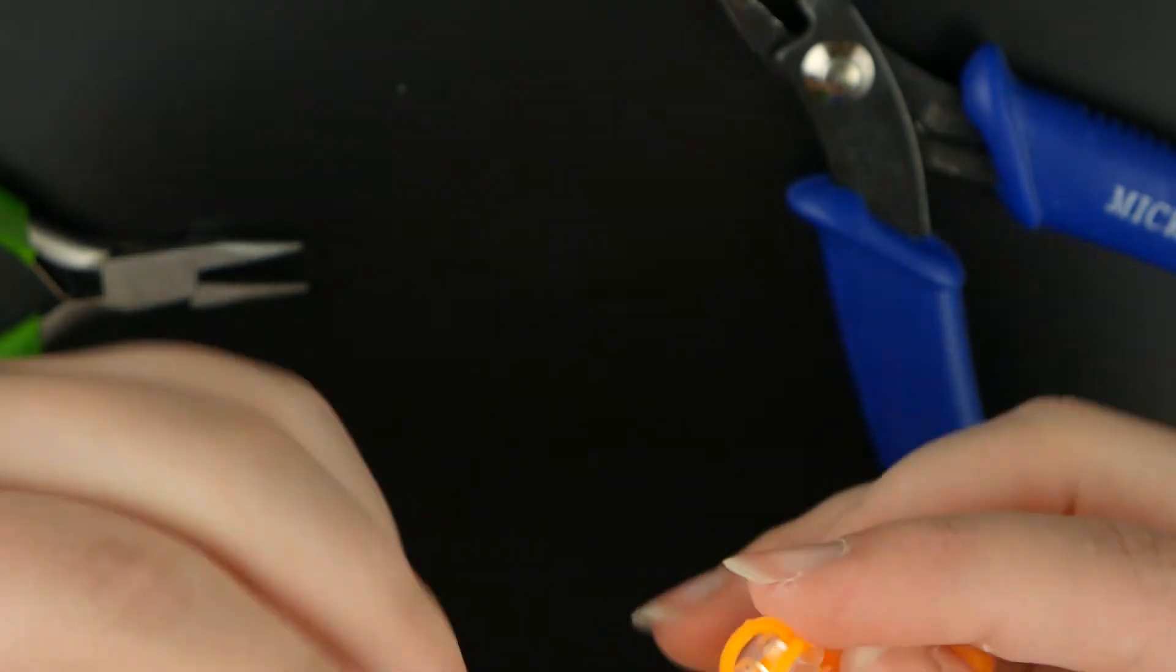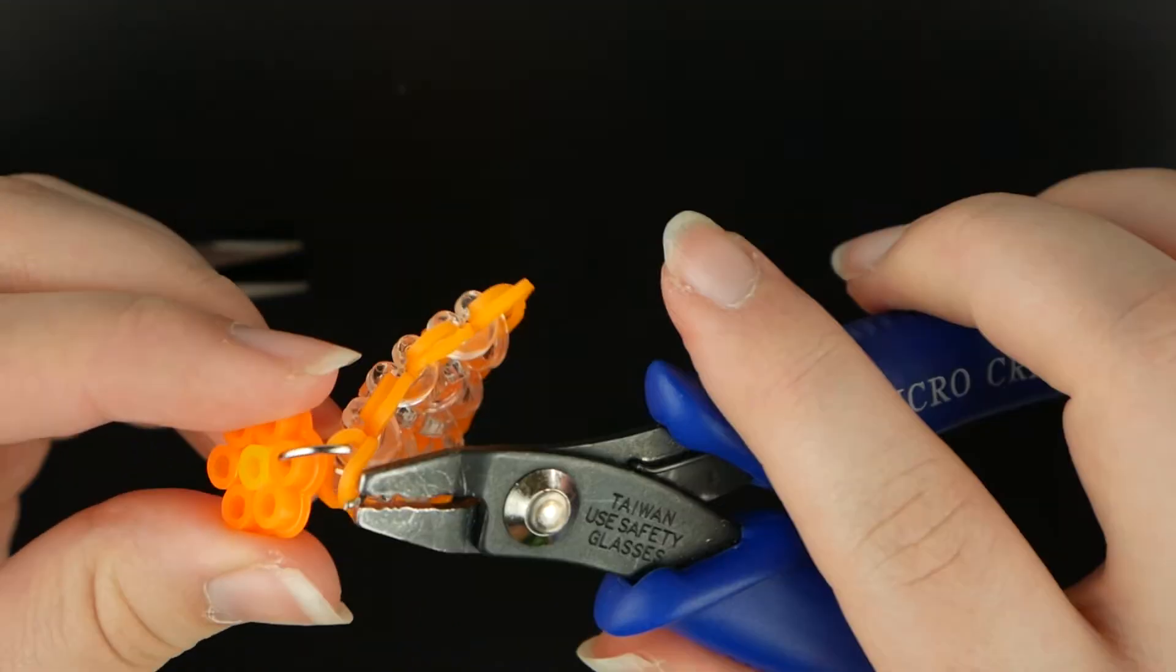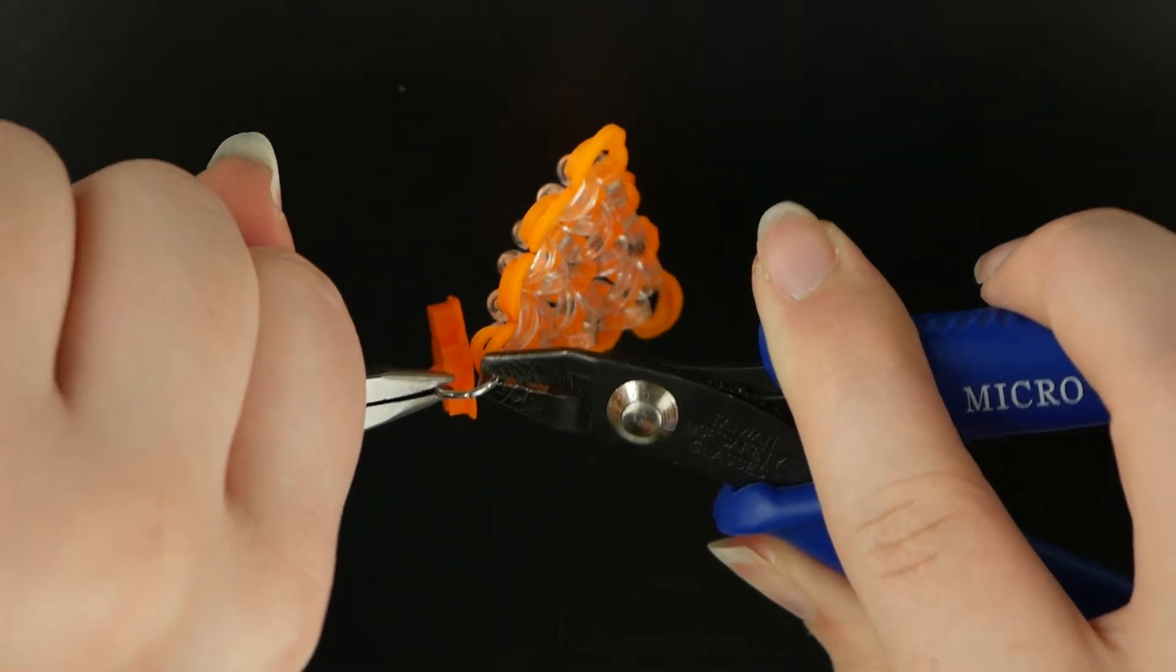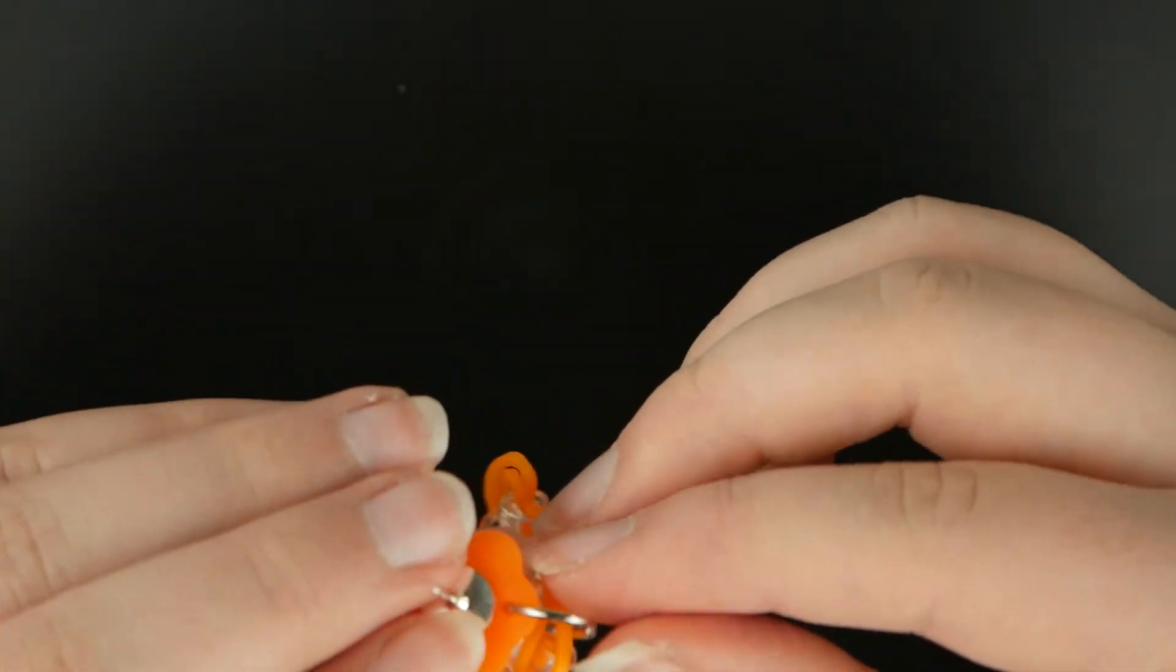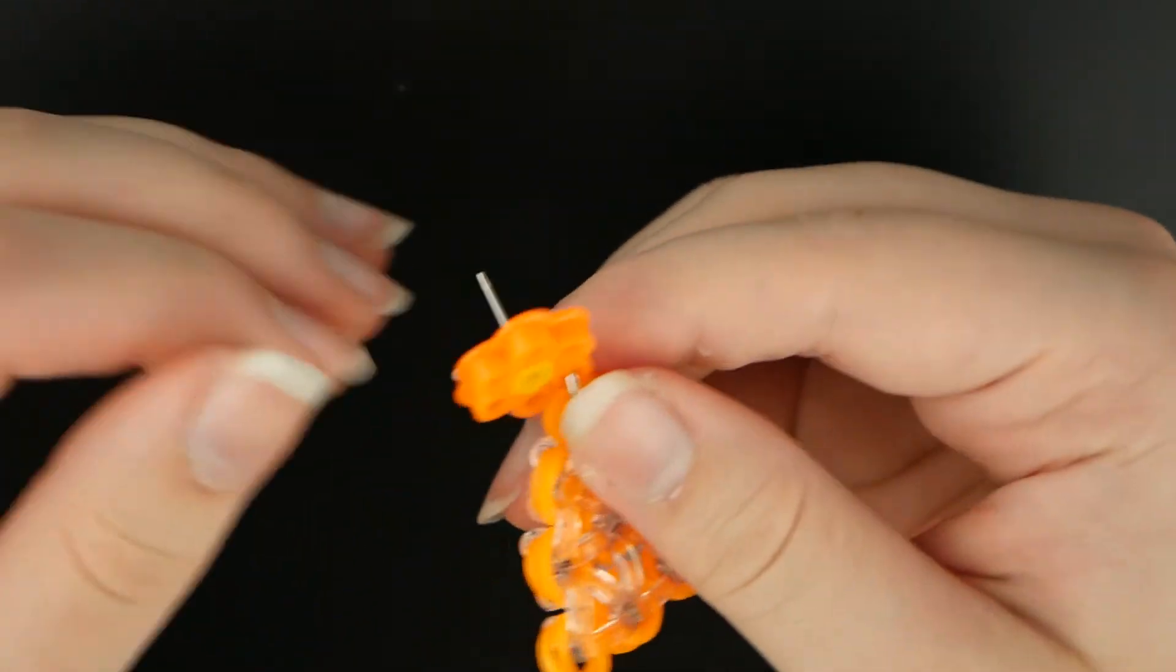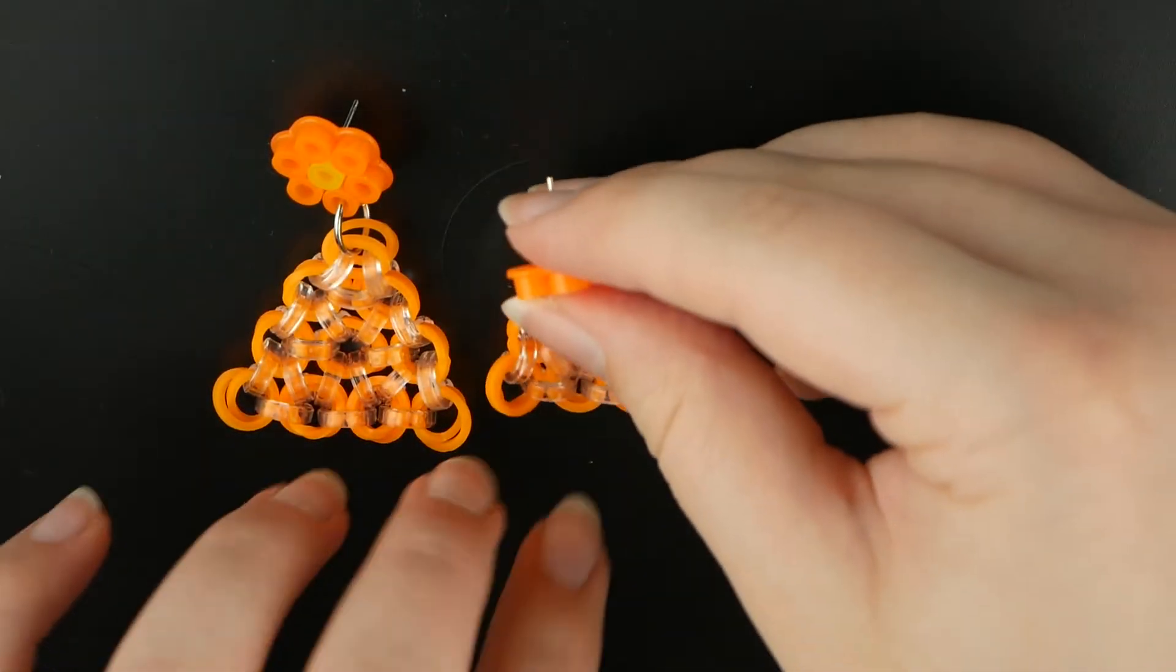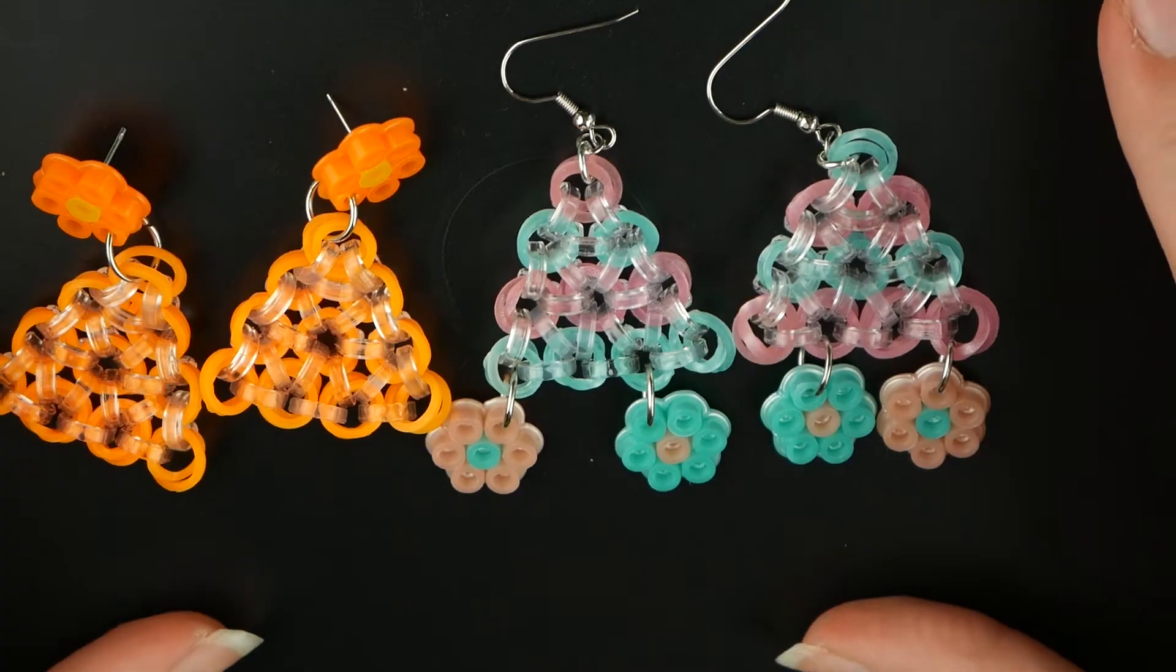So I got the jump ring on there. Now I'm just going to put one of the corners through there. One of the corner cap bands goes onto the jump ring, and then you want to close it up. I usually end up with the closure of the jump ring on the front, but I like to just move it to the back because I think it looks nicer.